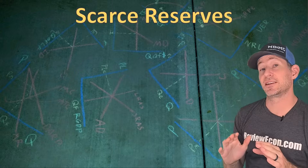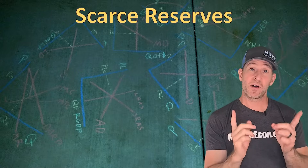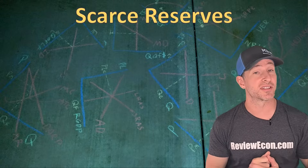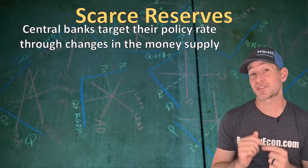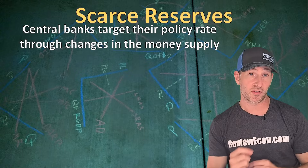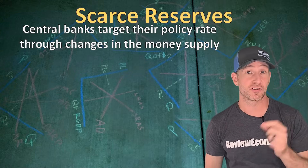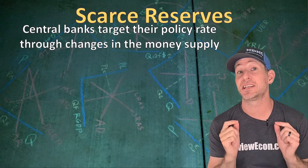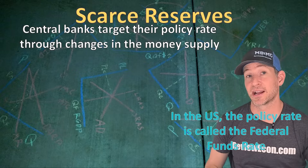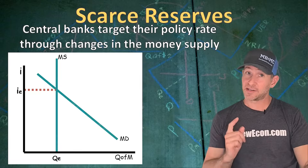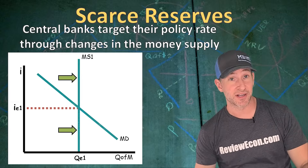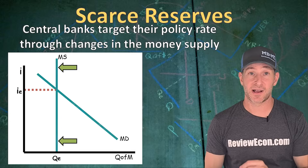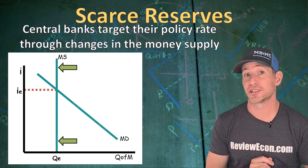Under a scarce reserve system, central banks target their policy rate through changes in the money supply. The policy rate is the interest rate that banks charge each other — in the United States it's called the federal funds rate. Increases in the money supply decrease the nominal interest rate in the money market, and decreases in the money supply increase that nominal interest rate.